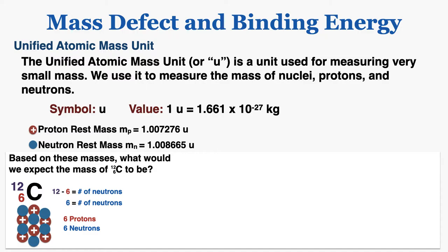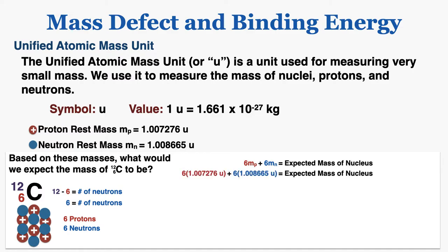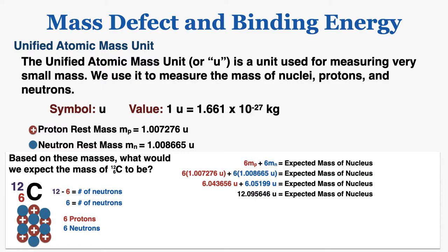Knowing there are six protons and six neutrons in the nucleus, I can multiply six by the mass of a proton and six by the mass of the neutron to find the expected mass of the nucleus. When I do that I find that the nucleus would be expected to have a mass of 12.095646u — six protons times the proton mass, plus six neutrons times the neutron mass.